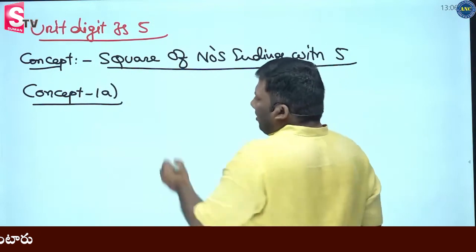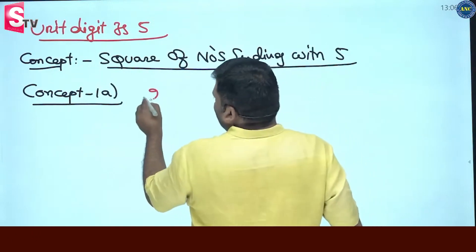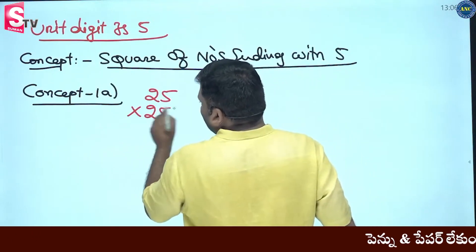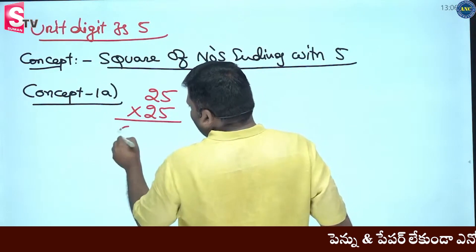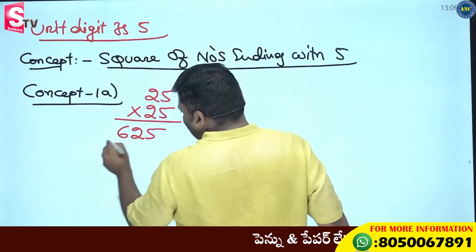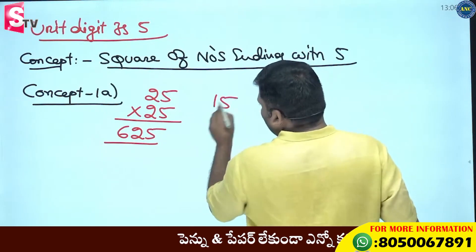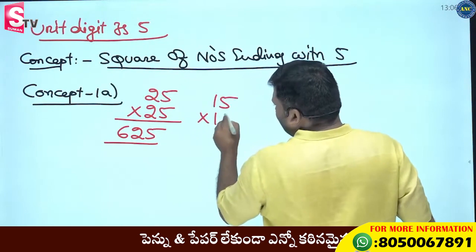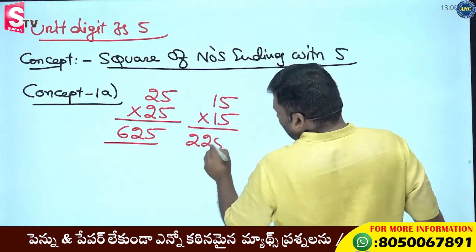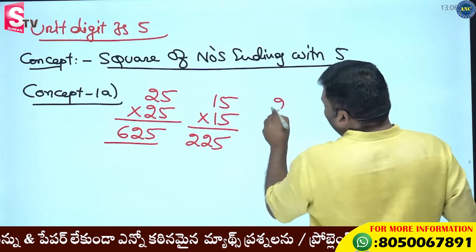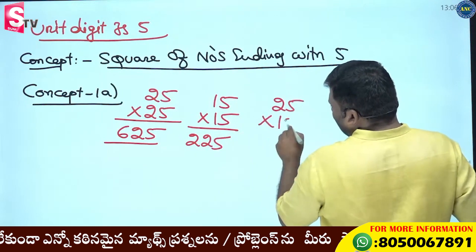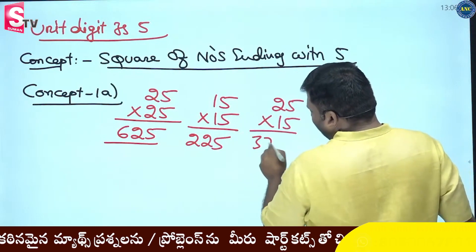Suppose we take 25 into 25, that gives 625. 15 into 15 gives 225. 25 into 15 gives 375.